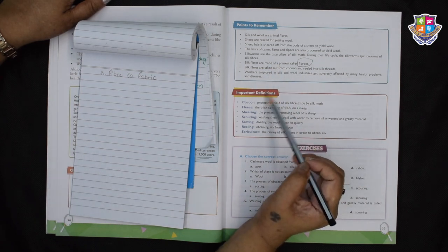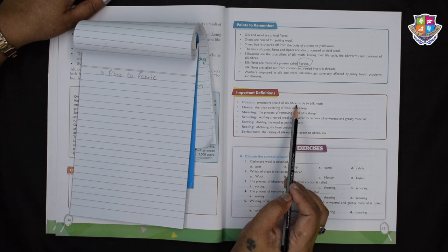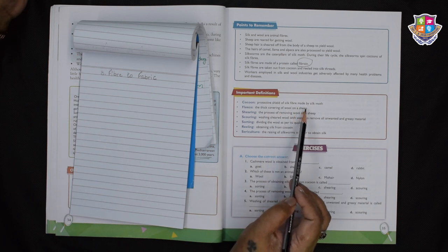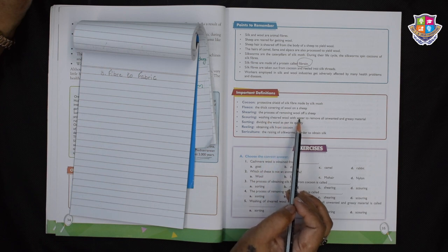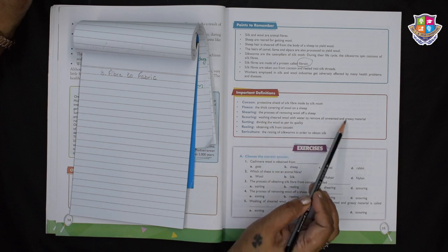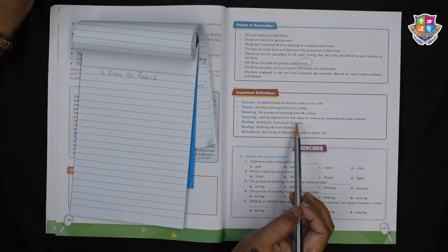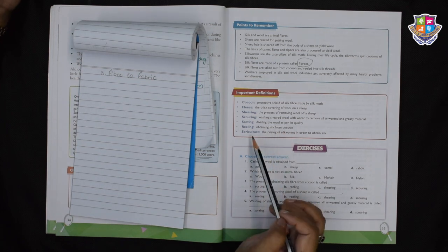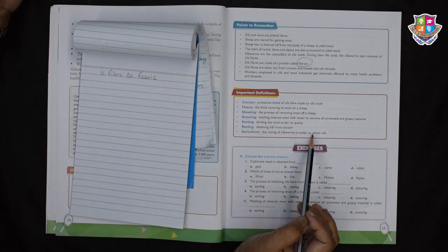Now, let's go further on to the important definitions. What is a cocoon? A cocoon is a protective shield of silk fiber made by silk moth. What is fleece? Fleece is a thick covering of wool on a sheep. What is shearing? Shearing is the process of removing wool off a sheep. What is scouring? Scouring is washing sheared wool with water to remove all unwanted and greasy material. What is sorting? Sorting is dividing the wool as per its quality. What is reeling? Reeling is obtaining silk from cocoon. What is sericulture? Sericulture is the raising of silkworms in order to obtain silk.